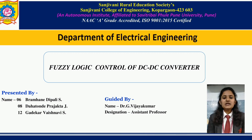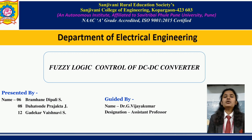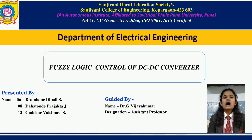Firstly, we need to know what is fuzzy logic control and DC to DC converter. Fuzzy logic is an approach to computing based on degrees of truth rather than the true or false — that is 1 or 0 — boolean logic on which the modern computer is based. Second, the boost converter output voltage is always higher than the input voltage.